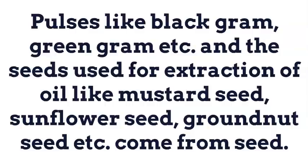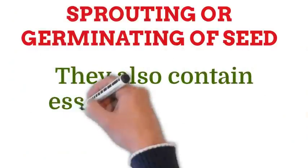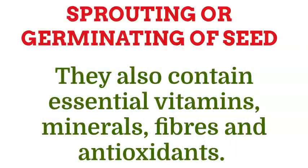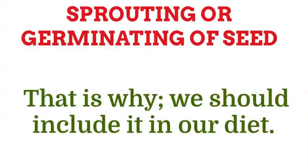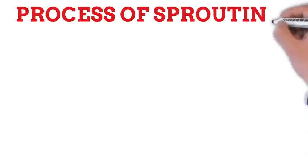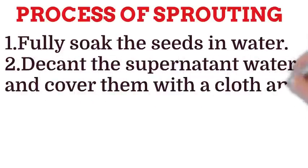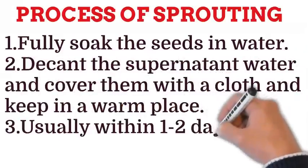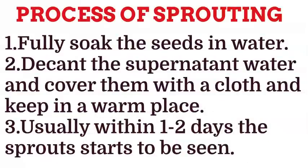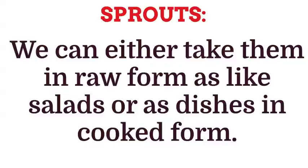Let's know about an important process — sprouting or germination of seeds. Sprouts are a very rich source of protein and iron. They also contain essential vitamins, minerals, fibers and antioxidants, which is why we should include them in our diet. Examples are sprouts of chana, moong and soybean. To sprout seeds: first, fully soak the seeds in water, then decant the water, cover them with a cloth and keep in a warm place. Usually within one to two days, the sprout starts to appear. We can take them raw as salads or as cooked dishes.